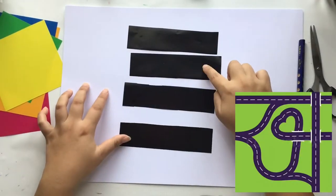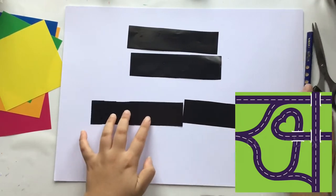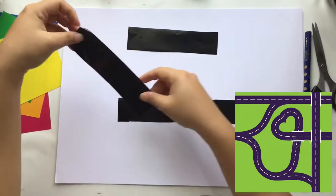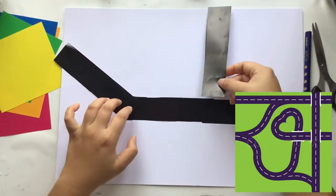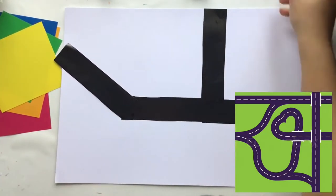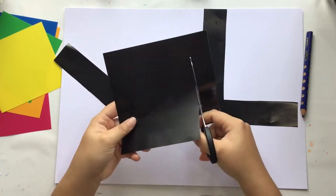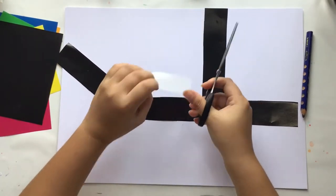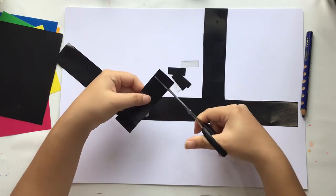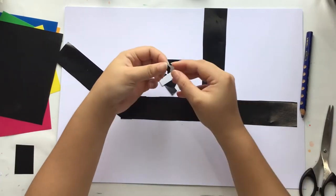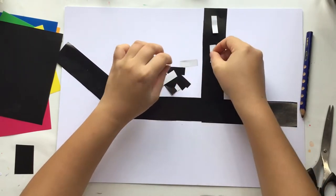After you cut the lines, you will have black stripes. You can arrange them to create a street, maybe two streets, and paste it on the paper. You can use the back of the origami paper, which is white, to create the marks, the white lines on the streets. Paste them and place them with some distance between each other.